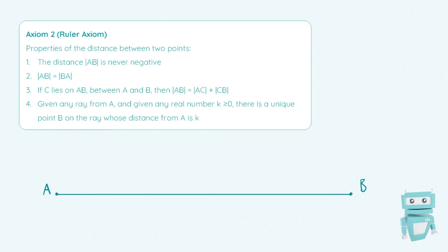Point three states that if C lies on AB, so we have a point C here between A and B, then |AB| equals |AC| + |CB|. In other words, distance is preserved through addition.